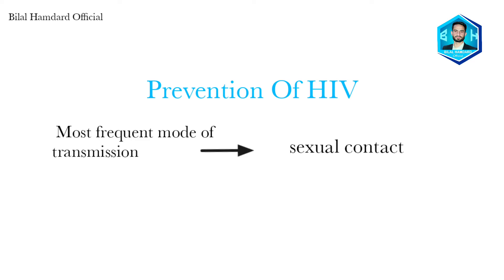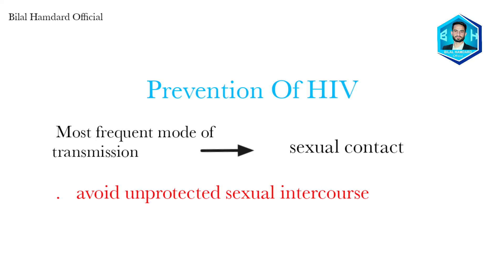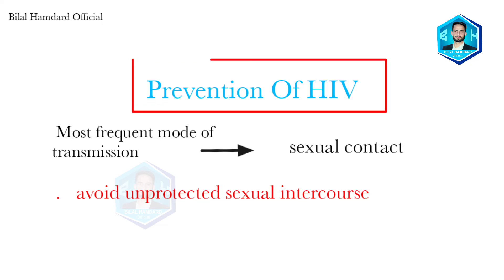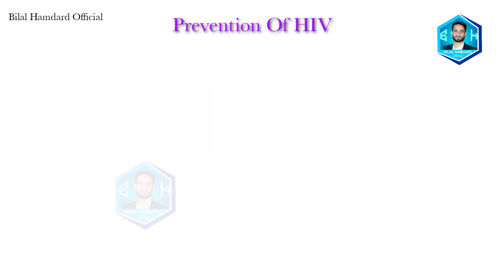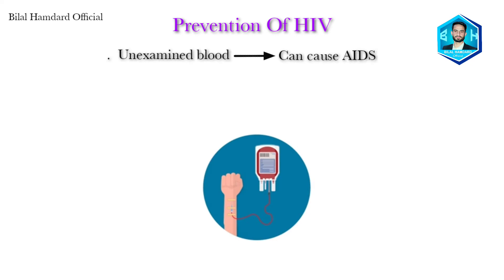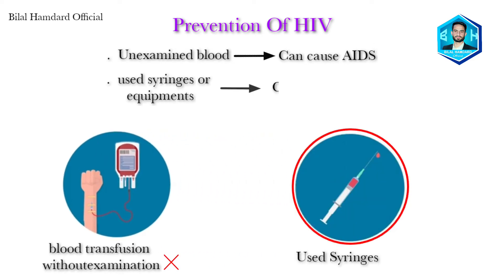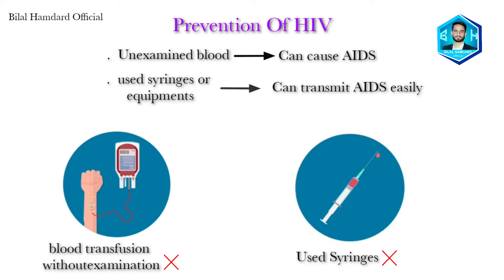The most frequent mode of transmission is through sexual contact, so avoiding unprotected sexual intercourse is the best way to prevent transmission of HIV. Another frequent method of transmission is blood transfusion, so getting blood transfused without prior examination should be strictly avoided. Additionally, the spread of HIV through blood is possible via shared syringes or equipment, so using syringes for medications or even sharp instruments like razors for personal use should be avoided.